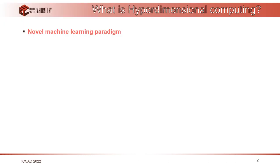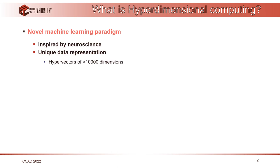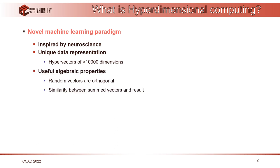What is hyperdimensional computing? It is a new machine learning approach inspired by neuroscience, based on representing data in the form of hypervectors — more than 10,000 dimensions — rather than simple numbers. It has several useful algebraic properties. For example, any two randomly generated vectors are with high probability orthogonal. And if we sum up two vectors, they will be more similar to their result than any other random vector.